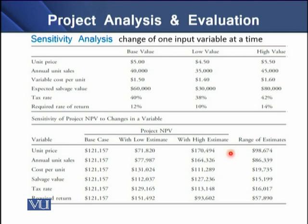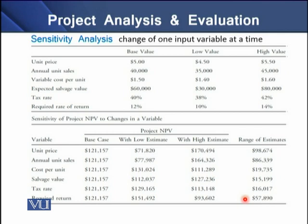The riskiness of these high-low estimates is shown in terms of ranges. To determine the range, we deduct the lower value from the higher value. Due to a change in unit price, the variation is $98,674, whereas due to change in the required rate of return, the NPV changes by $57,890. We can infer that NPV is most sensitive to changes in unit price and unit sales, but least sensitive to changes in the required rate of return.